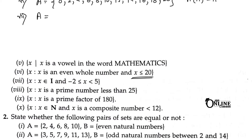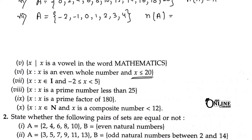Sum number 7: x belongs to integers (ℤ) and −2 ≤ x < 5. The numbers are −2, −1, 0, 1, 2, 3, 4. The last number is 4 because it is strictly less than 5, not equal to. So n(A) equals 7 and it is a finite set.